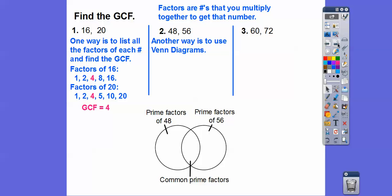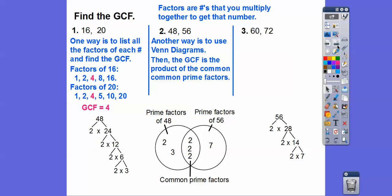Another way is to use Venn diagrams. So we'll do the prime factorization of 48 over here and 56 right here. So there's 48 and 56. And they both share three 2s in common. Then the GCF is just the product of the common ones. So 2 times 2 times 2 will give us 8 for the GCF.